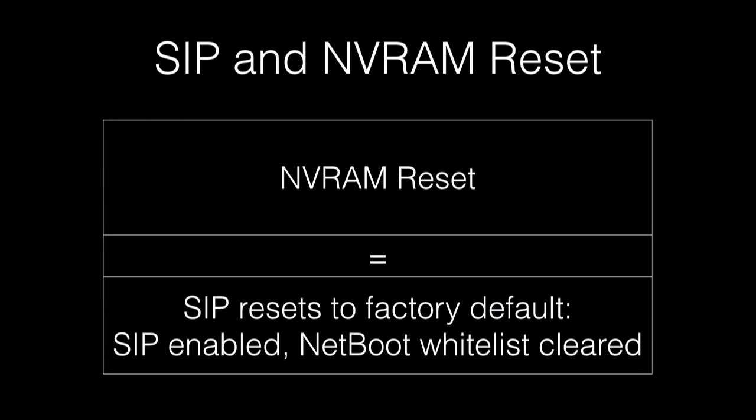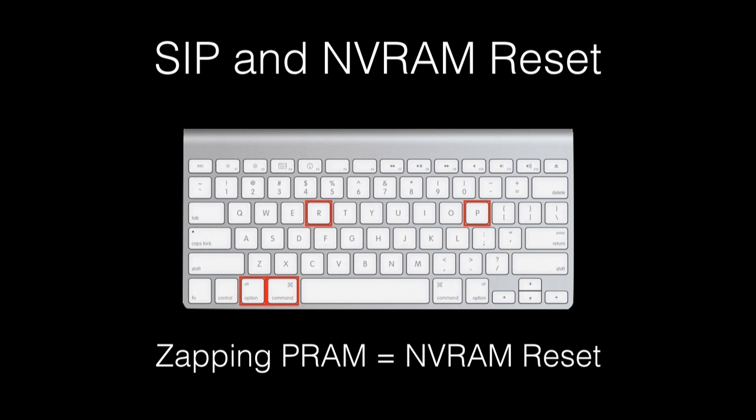Because SIP writes to NVRAM, resetting NVRAM back to factory defaults will also reset SIP back to its factory defaults — SIP enabled and no entries in the NetBoot whitelist. I've verified that a PRAM reset does this just fine. For folks who need to maintain a NetBoot whitelist, I recommend educating your colleagues about this behavior.